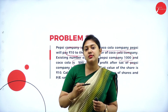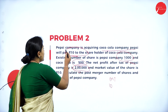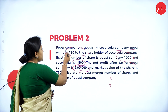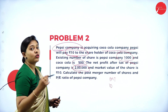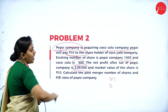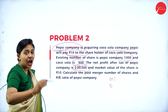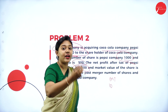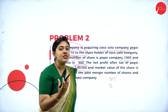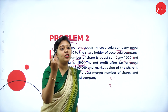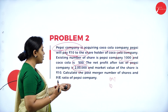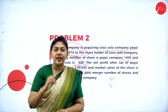First, we need to understand which is the acquirer company and which is the target company. Pepsi company is acquiring, so Pepsi is the acquirer company and Coca-Cola is the target company. After the merger and acquisition happens — after Pepsi acquires Coca-Cola — we need to calculate the total post-merger number of shares, and then the price-to-earning ratio of Pepsi company.